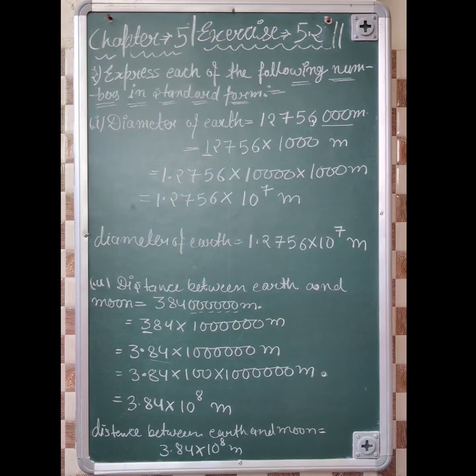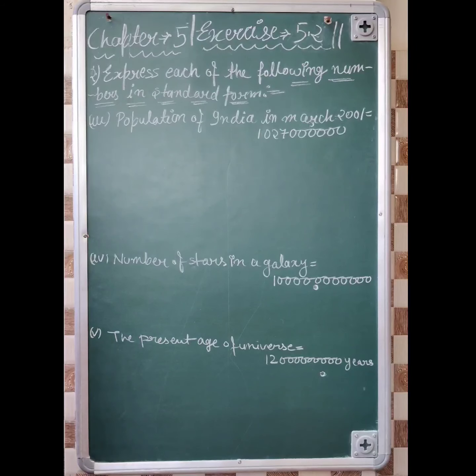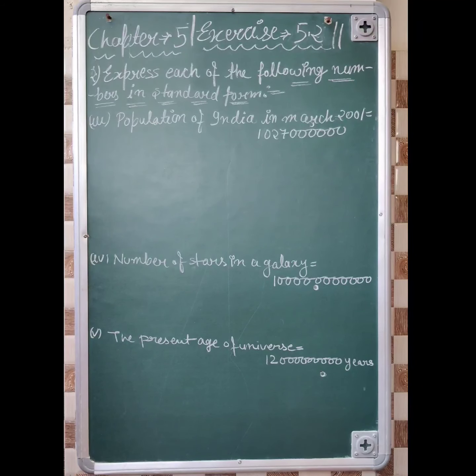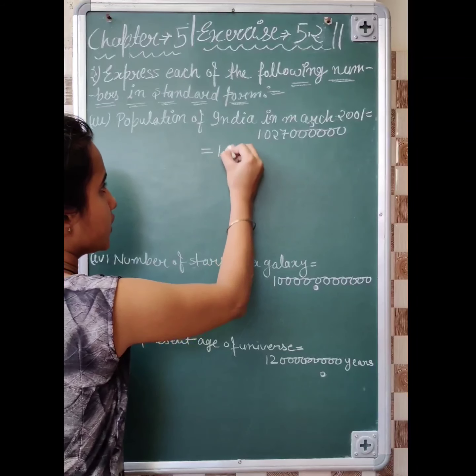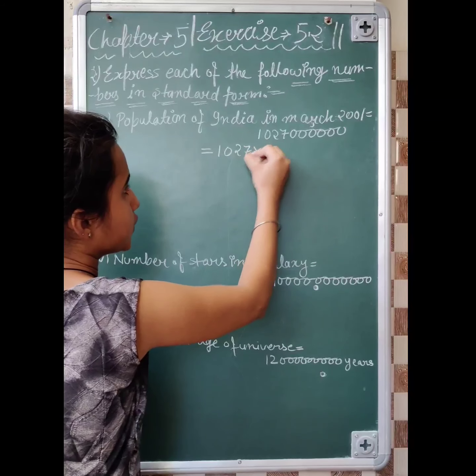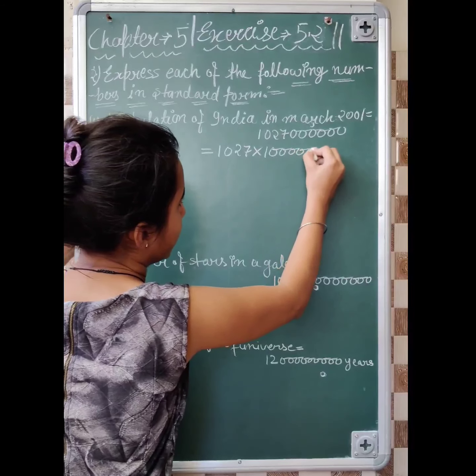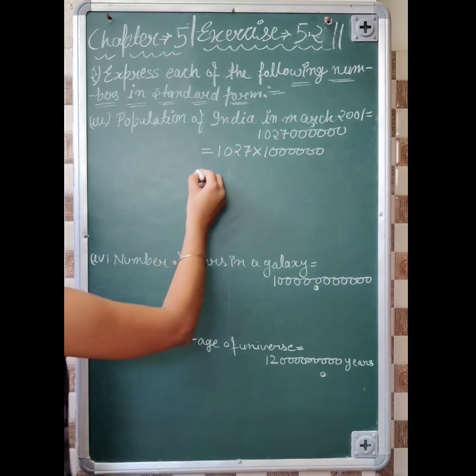Now let's come to the next part, the third part. Population of India in March 2001. In March 2001, what is the population of India? First, separate zeros like 1, 0, 2, 7 into 6 zeros. That means 1, 2, 3, 4, 5, 6.